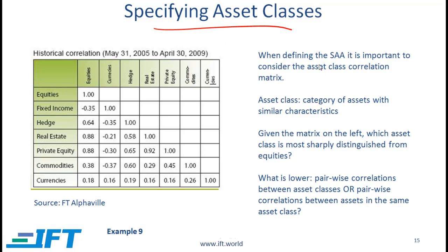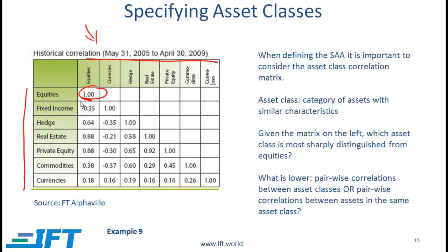When defining the strategic asset allocation, it is important to consider the asset class correlation matrix. What we are looking at here is a very simple correlation matrix with some classic asset classes. The correlation between equities and equities is obviously 1, and the correlation between fixed income and equities is minus 0.35. Other asset classes include hedge funds, real estate, private equity, commodities, and currencies. An asset class is a category of assets with similar characteristics, similar attributes, and similar risk and return.